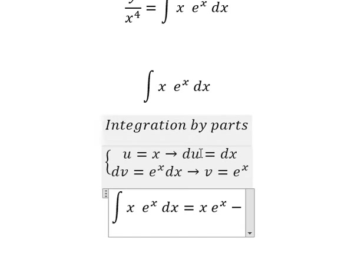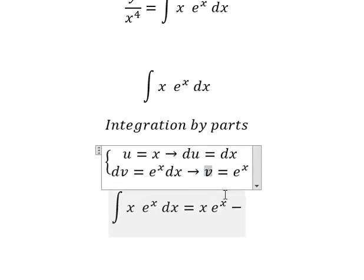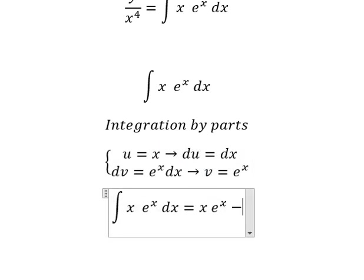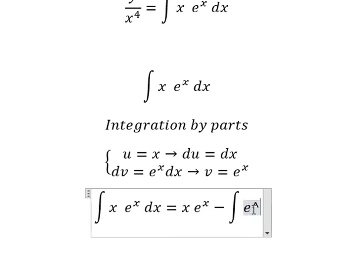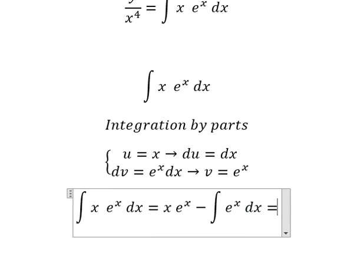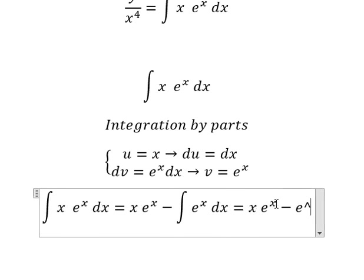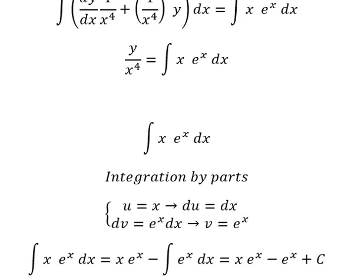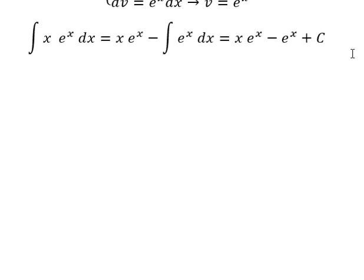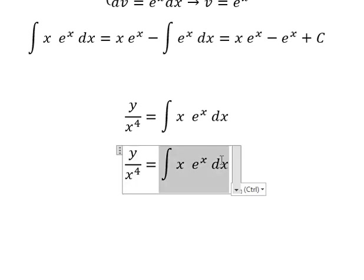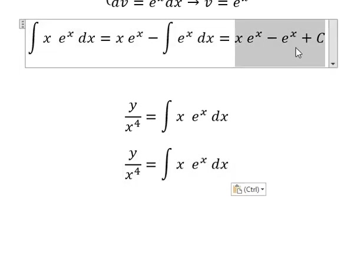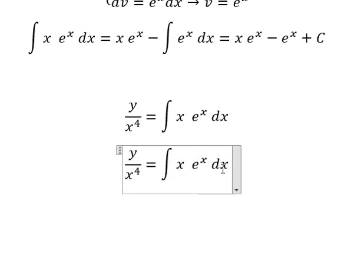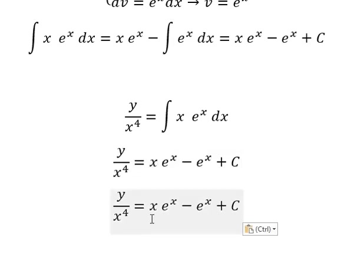Minus we have u multiplied by v, so we have the integration of e to the power of s ds. The integration of this gives e to the power of s, and we put plus C. Now we go back and substitute. Later, we multiply both sides by s to the power of 4.